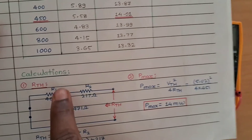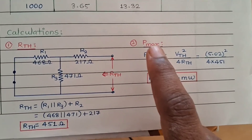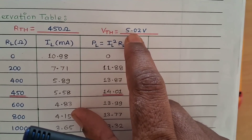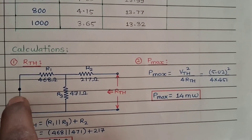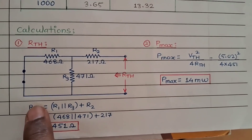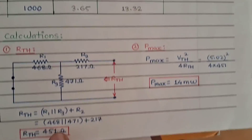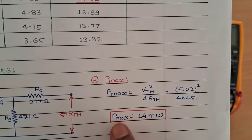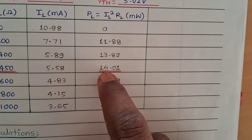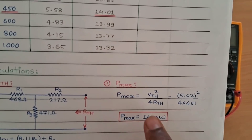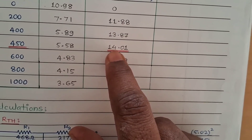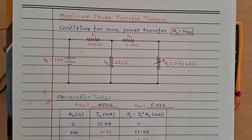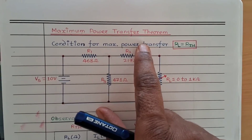Now we match experimental results with theoretical results. For maximum power we need Vth and Rth. Vth measured is 5.02 volts. Theoretically, after shorting the voltage source and calculating, Rth comes out to 451 ohms, while experimentally we measured 450 ohms. Substituting these values, maximum power is theoretically 14 milliwatts, and experimentally we get 14.01 milliwatts — the results are almost identical.